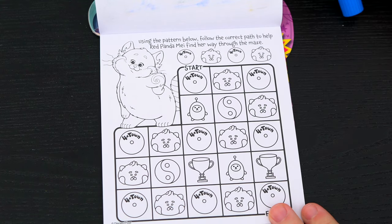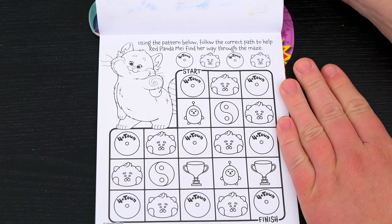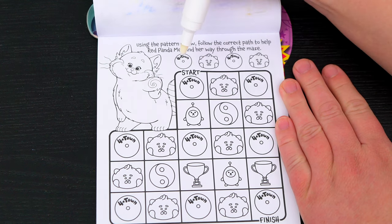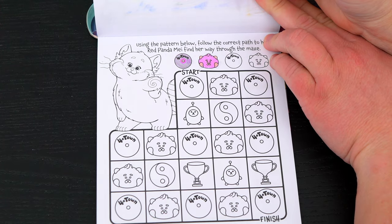Using the pattern below, follow the correct path to help red panda Mae find her way through the maze! Okay, so it looks like the pattern is four-town, red panda, four-town again, and red panda!